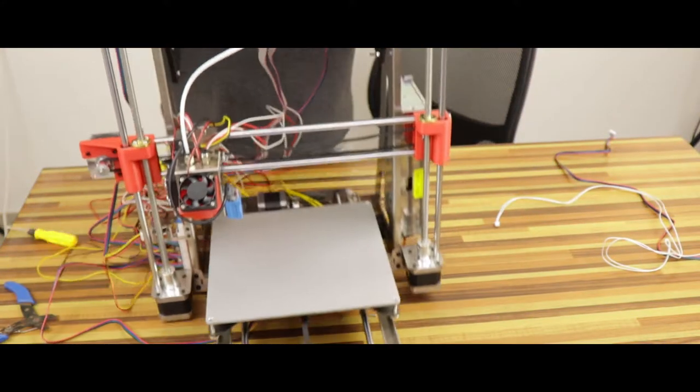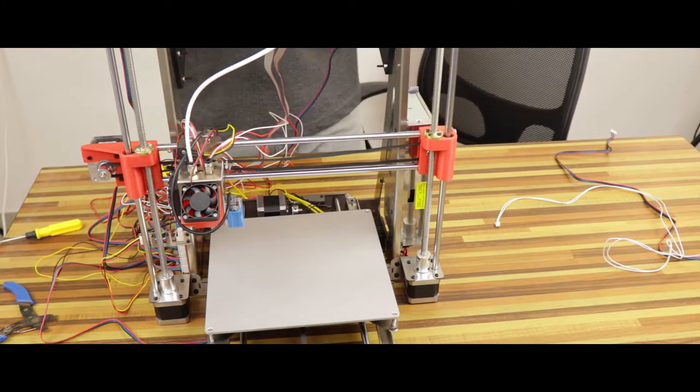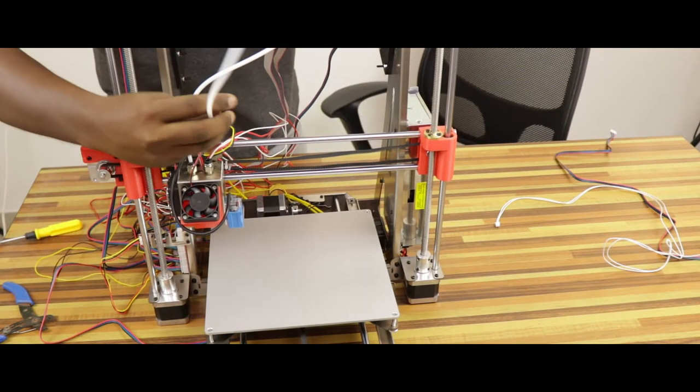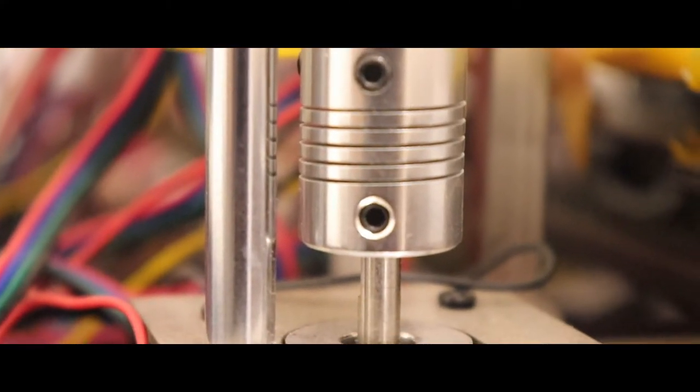Fine, the wiring is complete. Now let's grind the PTFE tube to allow the filament to reach the hotend from the feeder. It's time to tighten the jack screws of the coupling and wherever tightening is necessary.